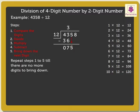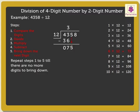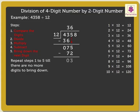Here we again compare seventy-five and twelve. Seventy-five is greater than twelve, so we can divide seventy-five by twelve. The nearest product to seventy-five in the table of twelve is seventy-two. So, we write six in the quotient above the five and seventy-two under seventy-five. Next, subtract seventy-two from seventy-five, which is equal to three.